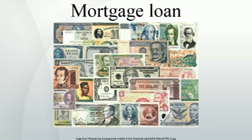As with other types of loans, mortgages have an interest rate and are scheduled to amortize over a set period of time, typically thirty years. All types of real property can be, and usually are, secured with a mortgage and bear an interest rate that is supposed to reflect the lender's risk.